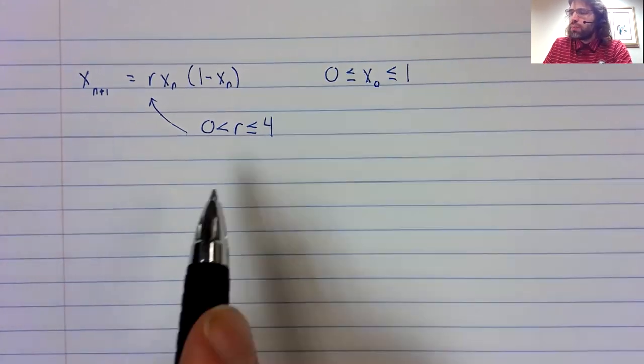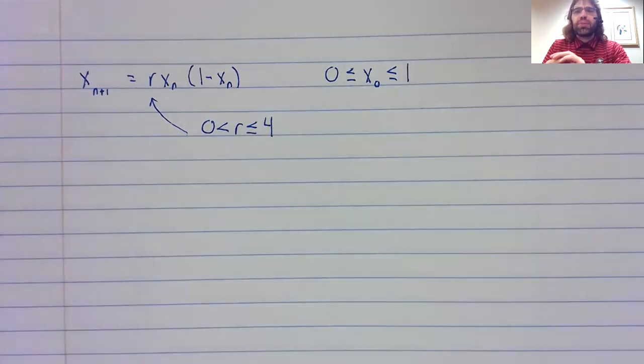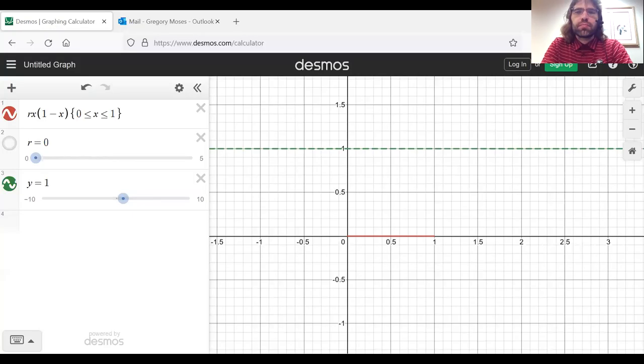But why four in particular? Well, the way these parameters were decided on is suppose you have any value between zero and one, and you hit it with this equation.